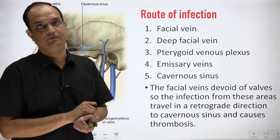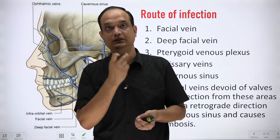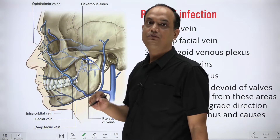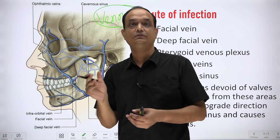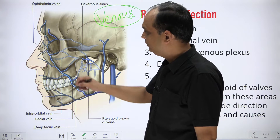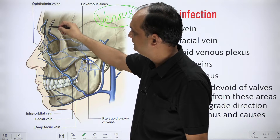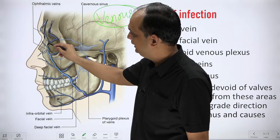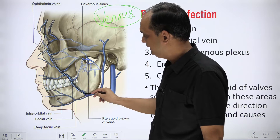Now we need to understand the route of infection — how infection present in the lower part of the nose can ascend intracranially. Looking at the venous drainage diagram: you have the supratrochlear and supraorbital veins joining together to form the angular vein. This angular vein runs downward to form the facial vein, which is the key vessel in understanding this drainage pathway.